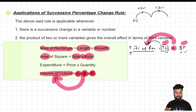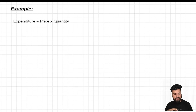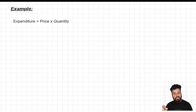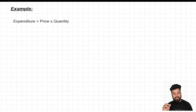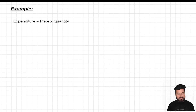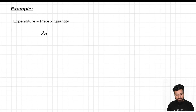Things might not be very clear at this point, so let's use an example to understand the second application. I have picked a very easy formula which most of us are already aware about — that is expenditure equals the product of price and quantity. My expenditure depends on two things: what is the price of that article, and how much quantity I am buying. Let's say a family buys an article priced at 20 rupees per kg, and at this rate the family consumes 5 kg. So what is the total expenditure? It would be 100.